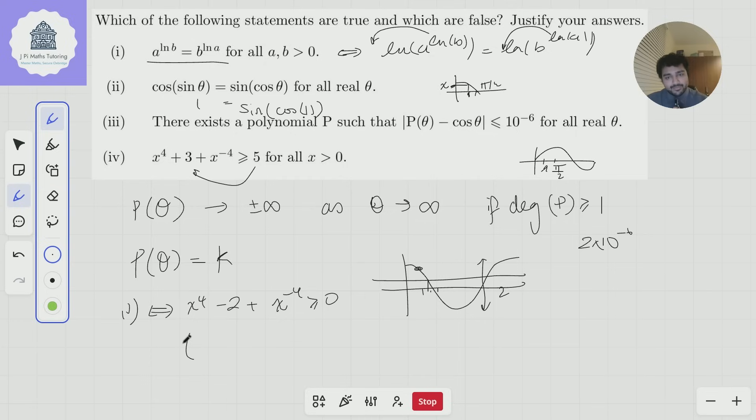So this is true if and only if x^8 - 2x^4 + 1 ≥ 0. And now this should look like a quadratic that factorizes very, very nicely.